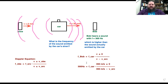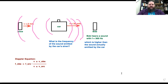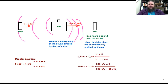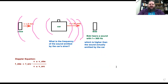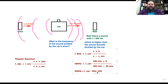So we know the frequency Bob hears is 300 hertz, we know the speed of sound is 350, and we know the source's speed — the speed of the car — is just 20 meters per second. The frequency that Bob hears equals the frequency the car creates, multiplied by 350 over 330, since the meters per second cancel out. We can even cancel the zeros: 350 over 330 becomes 35 over 33.